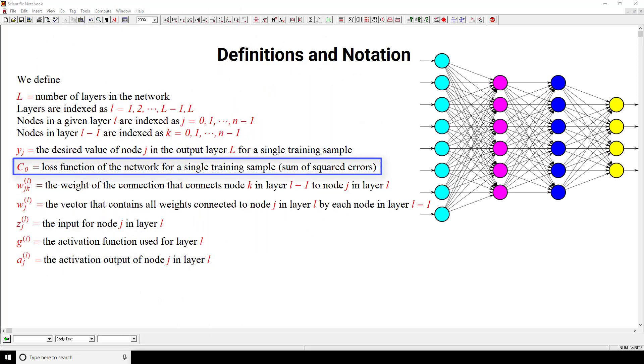Next, we define C sub 0 as the loss function of the network for a single training sample, which is going to be the sum of squared errors here. And actually, just like in our previous video, our discussion here is mostly going to be focused around passing one single training sample into the network at one time and seeing how backpropagation works in that regard. And then the logic that we build up here will be able to generalize to when we pass more than one training sample at a time.